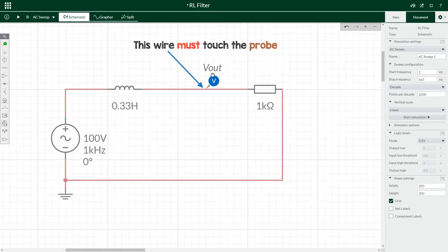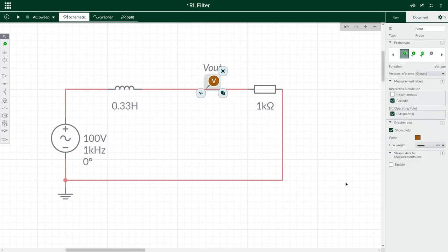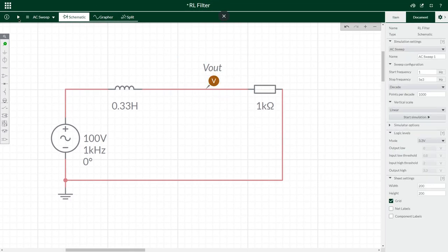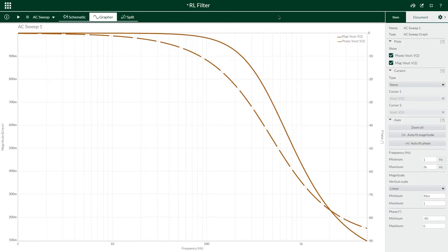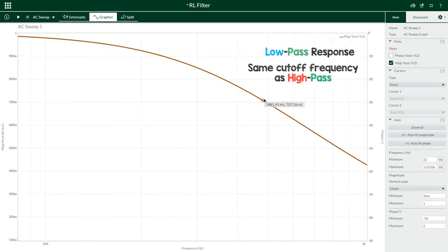For graph traces, I use brown for resistor, blue for inductor and red for capacitor. Simulate again, and happy days. There's our low-pass response with the resistor output. It's got the same cutoff frequency as a high-pass.